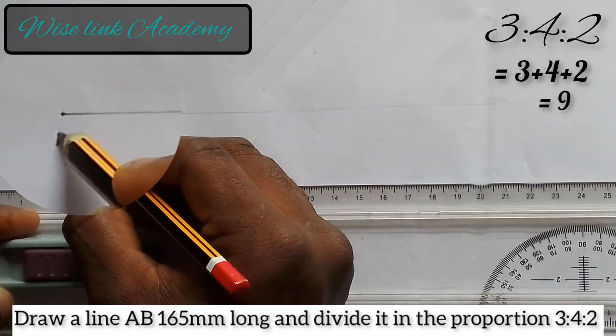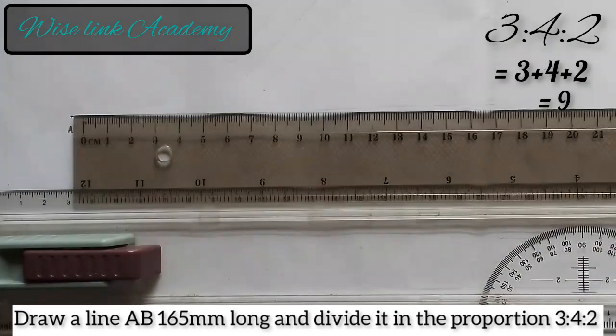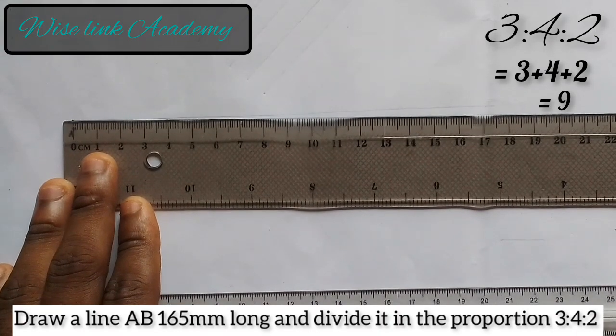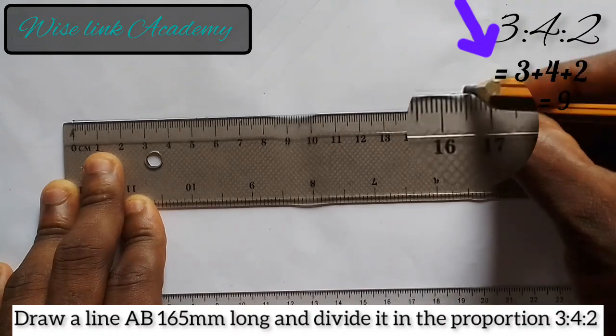Let's say this is my point A, B. So AB is 165mm. That's 16.5cm. With the aid of my ruler, I will measure 16.5cm. From this point here to this point is 16.5cm.